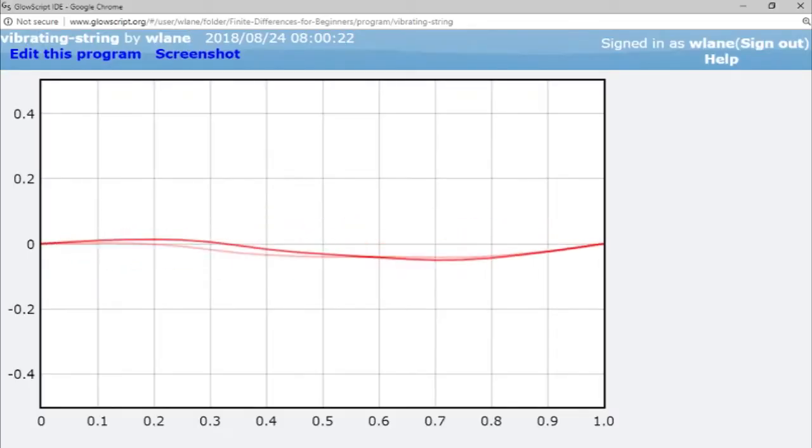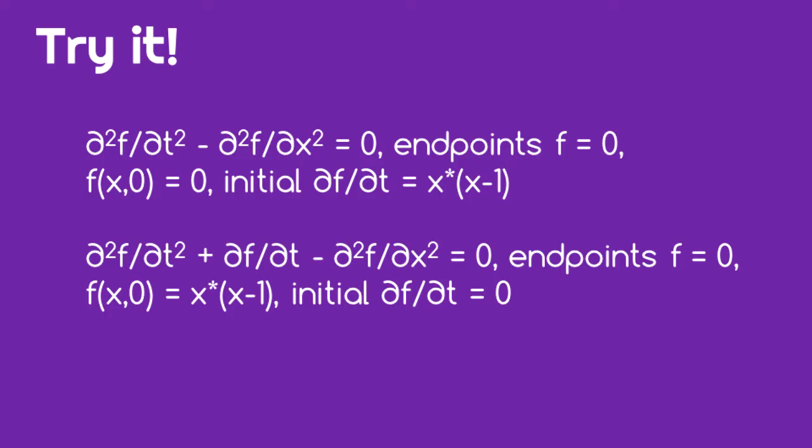The resulting animation shows us how the string behaves, keeping the endpoints fixed. You should now be able to use the method of finite differences to solve a partial differential equation with time as an independent variable.